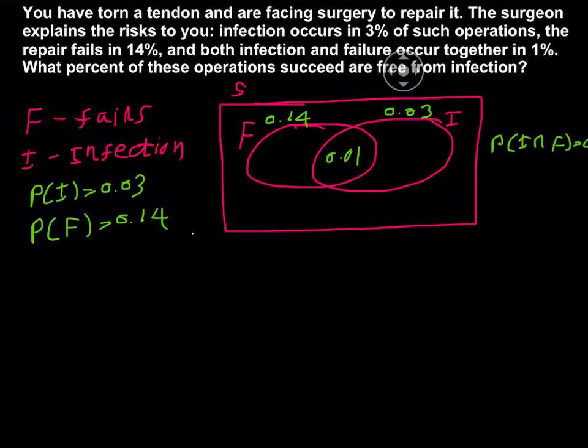So now go back to the Venn diagram. 0.01 is the both case. Now we go to the F. So F has 0.14, but we already have 0.01 in F, therefore this only part, only F should be 0.14 minus 0.01, which is 0.13.